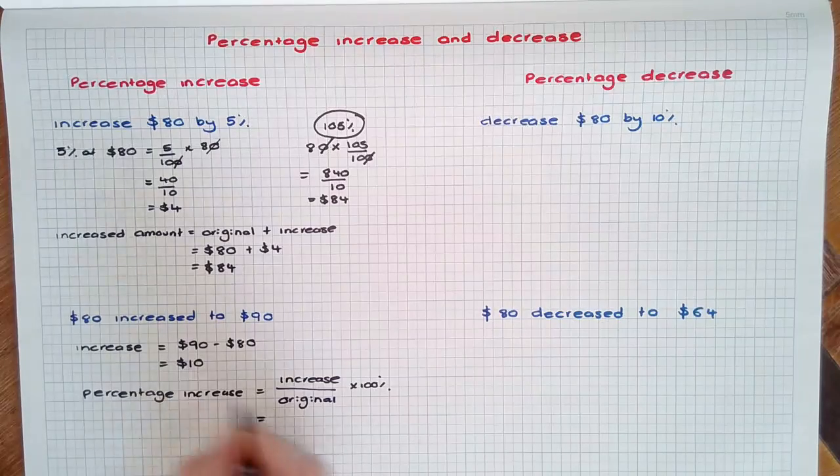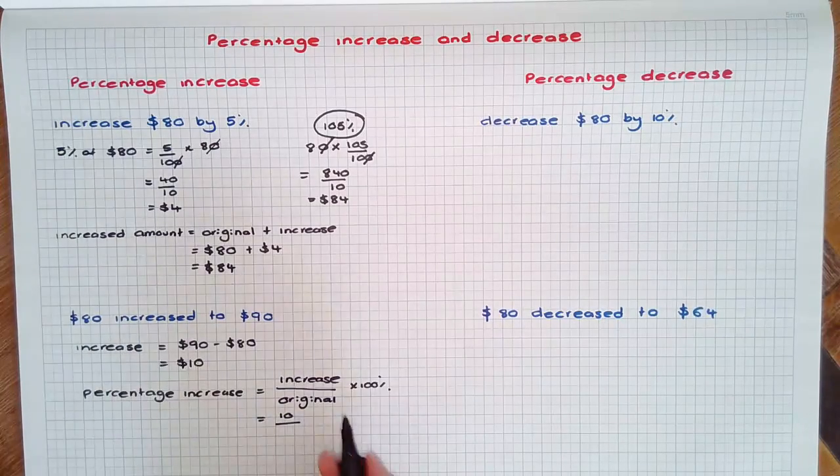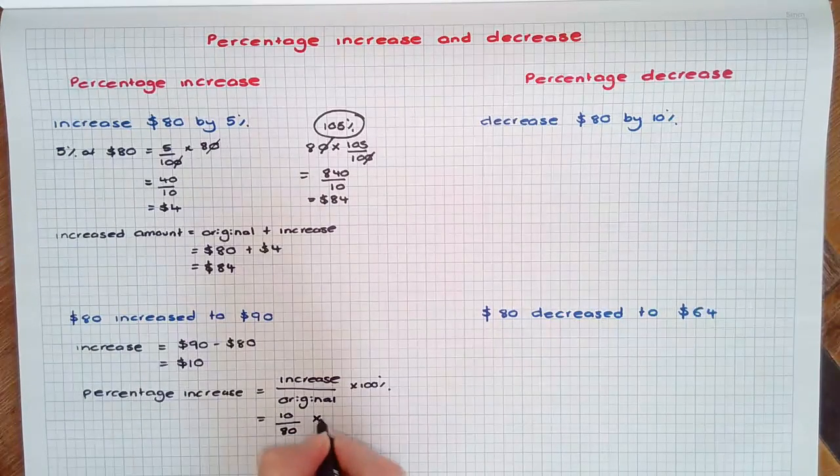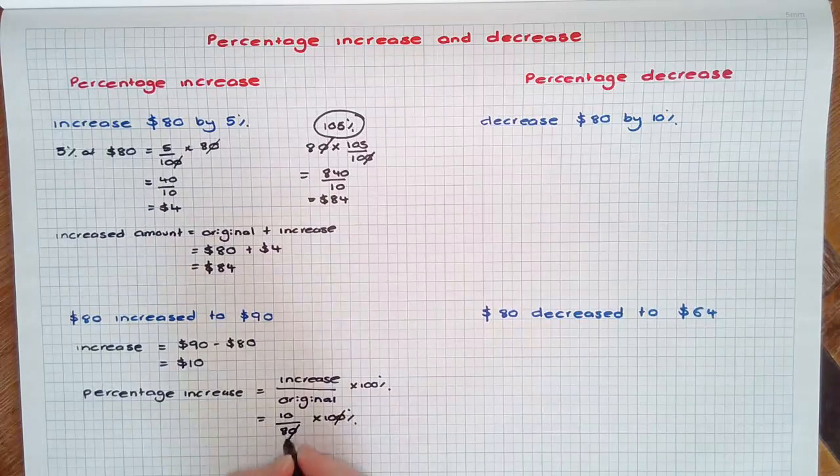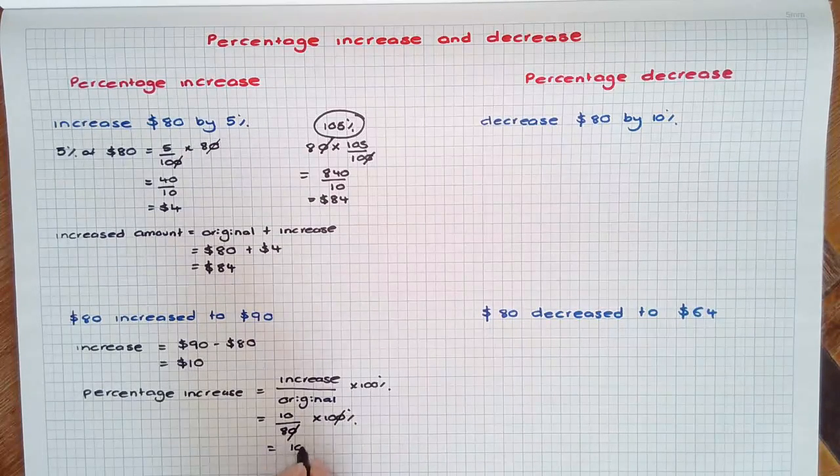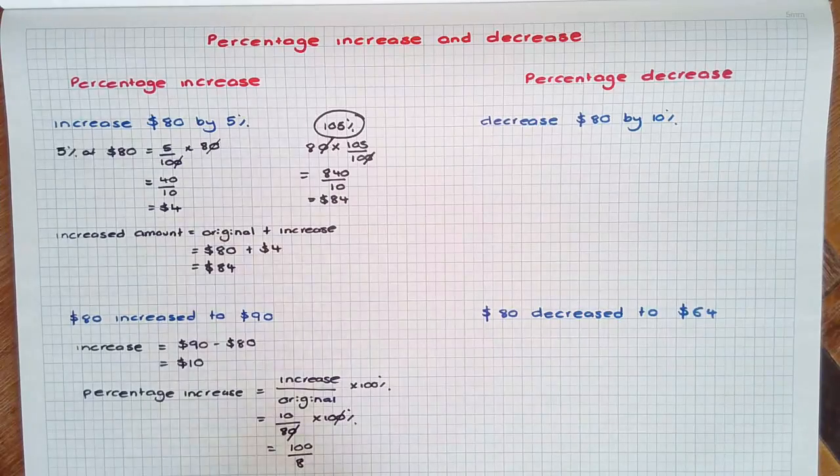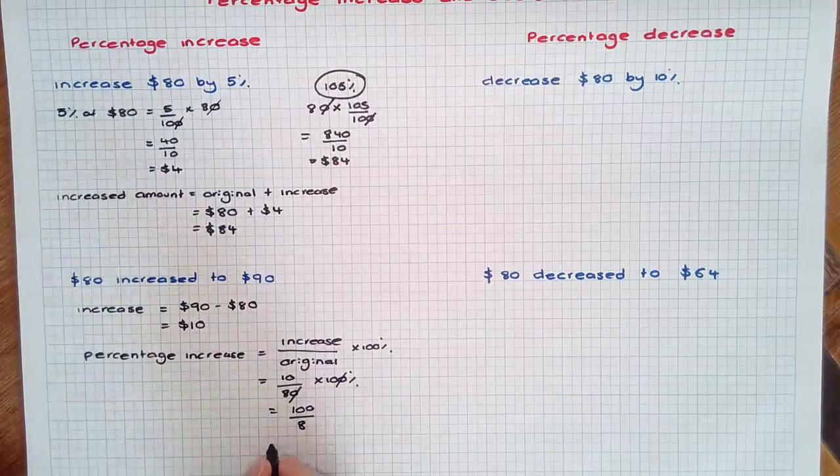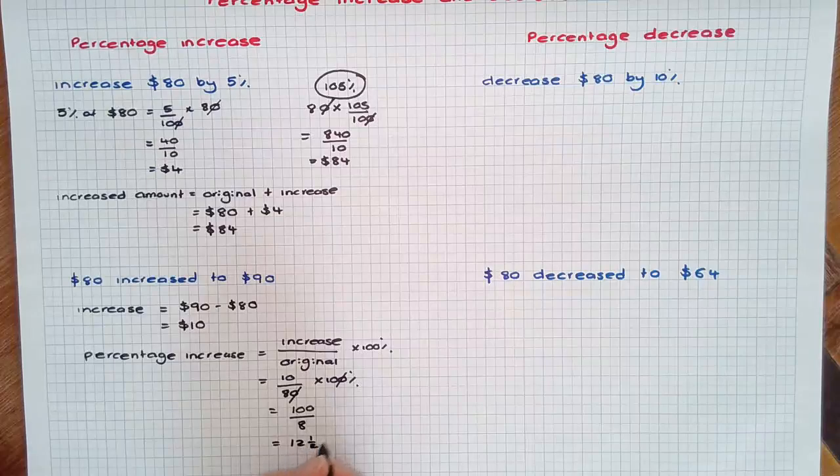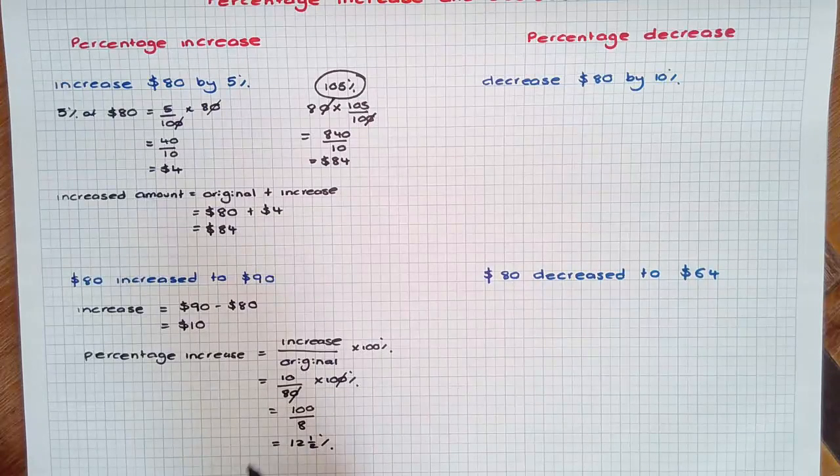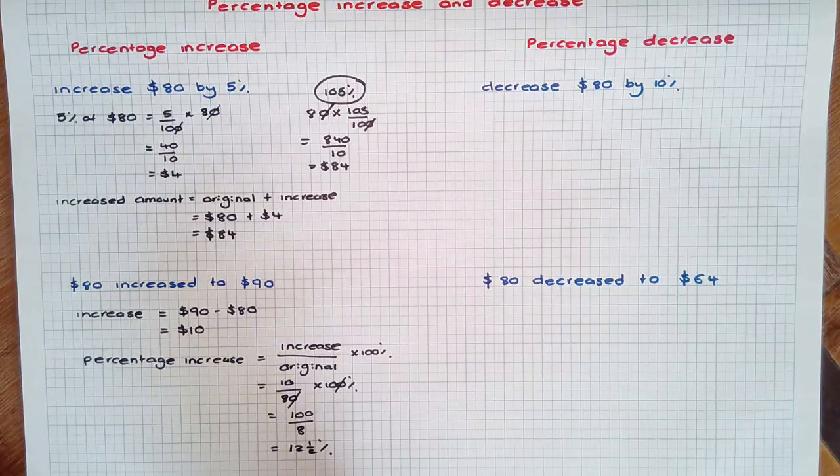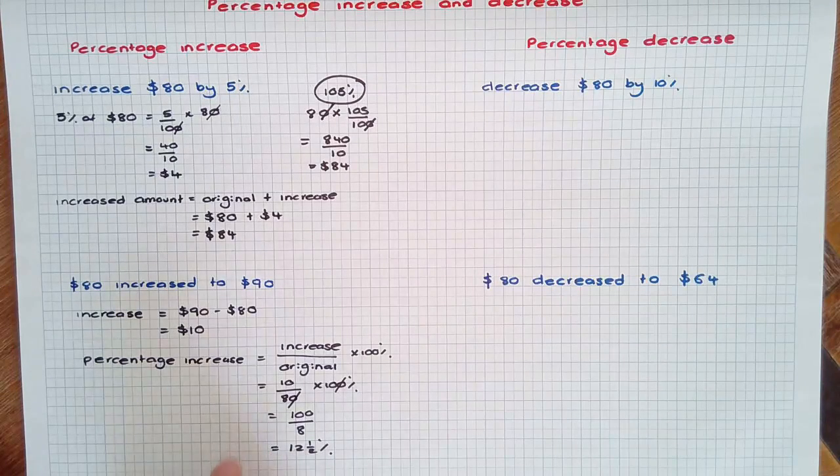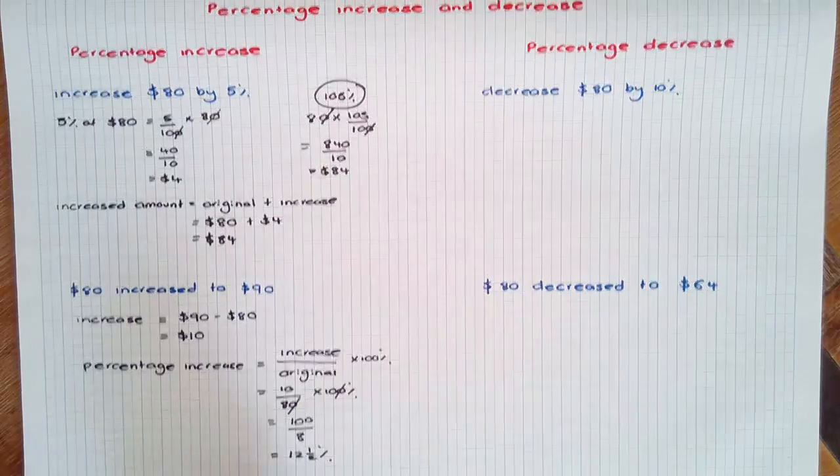Here the increase was $10 and the original was 80 times 100%. Using some cancelling, dividing by 10, dividing by 10, I have 100 over 8 which simplifies to 12.5%. Percentage increases are often seen and used to describe sales, profits, house prices, and population growths.